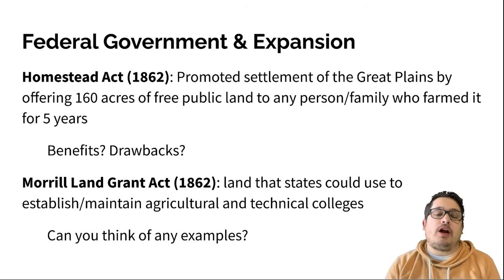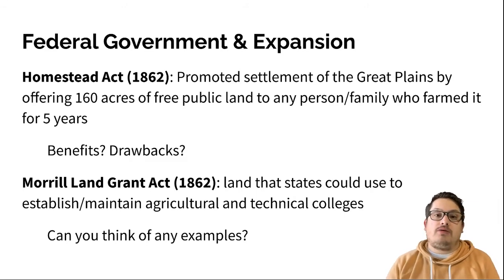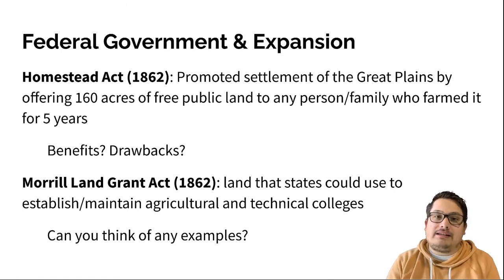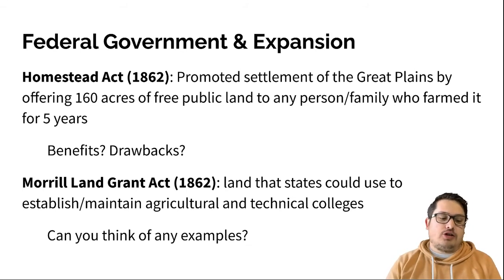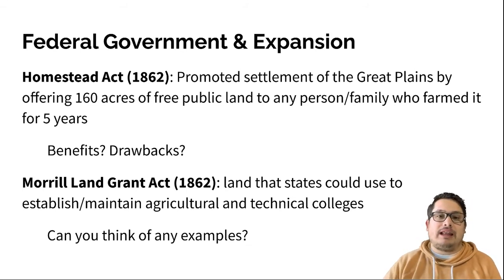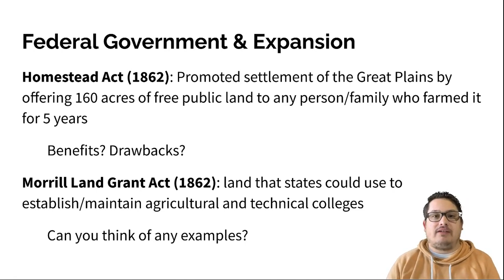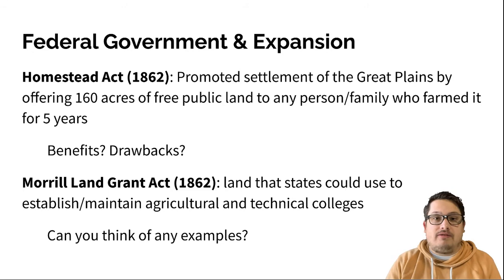The federal government also wants to put forth an effort to get people out into the West to live there and get it established. They use similar incentives to what we've seen in the past — something called the Homestead Act, in 1862, literally during the Civil War. This is trying to focus on settlement in the Great Plains, offering 160 acres of free land to any person or family who will cultivate it and take care of it for five years.